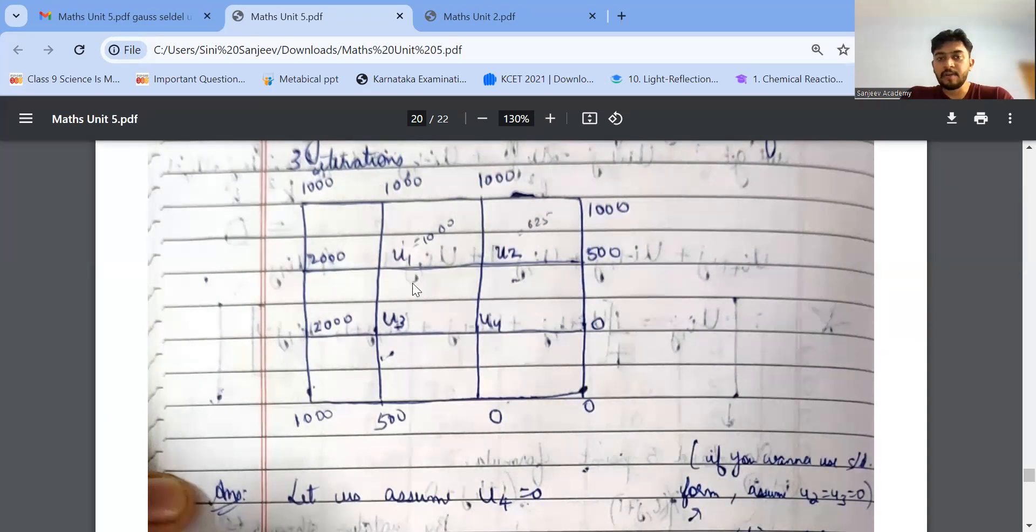For finding U1, there are two methods in this, one is the diagonal method. Just listen for two to three minutes and it will be very clear because this is the most easiest chapter and it is well below our level. So there are two things to remember, one is a diagonal formula, other is a standard formula. So for finding the first one let us take U1, I will be using diagonal formula.